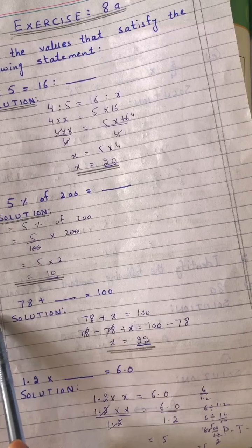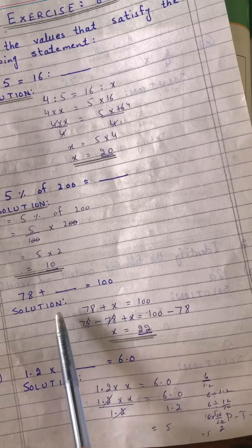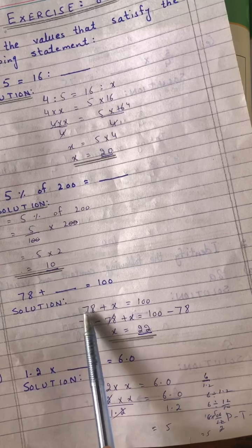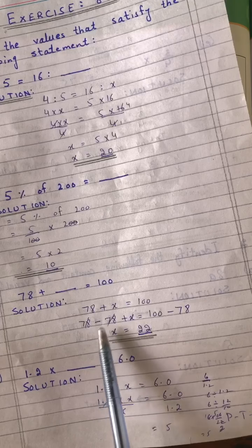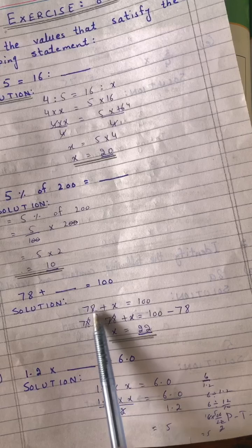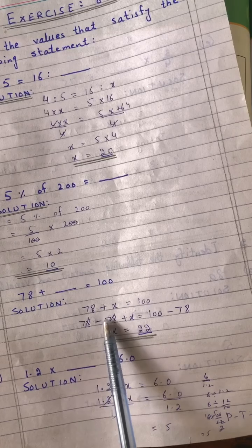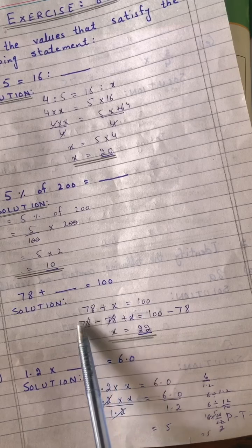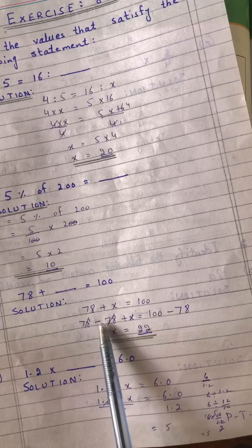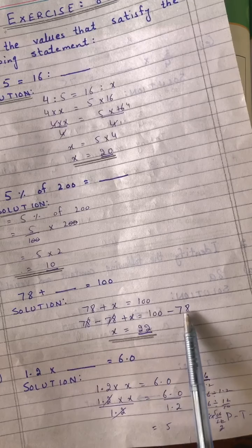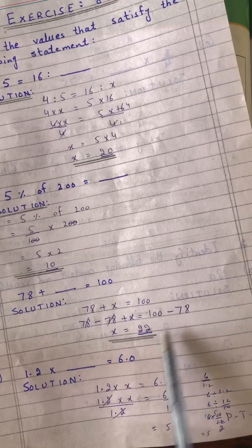Part C: 78 plus X is equal to 100. For the solution, plus inverse is minus, minus inverse is plus. Multiply inverse is division, division inverse is multiplication. Here we have addition, so we subtract. 78 + X = 100. X = 100 - 78 = 22.